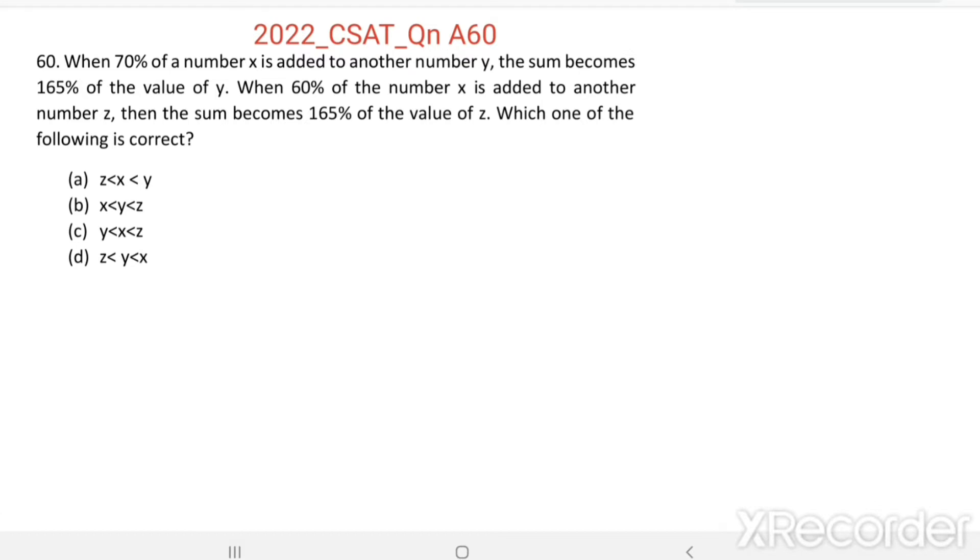But here, three numbers are there: x, y, and z. Then 70% of number x is added to another number y. 70% of x means this we can write in the form of fraction 70 divided by 100, which equals 70 divided by 100 into x. This is equal to 0.7x.